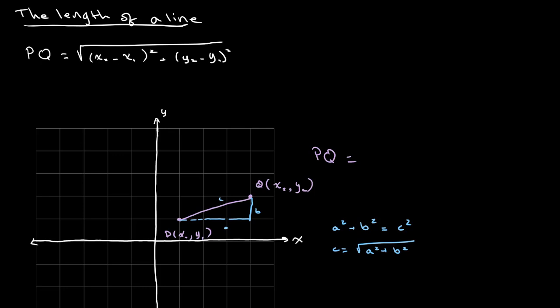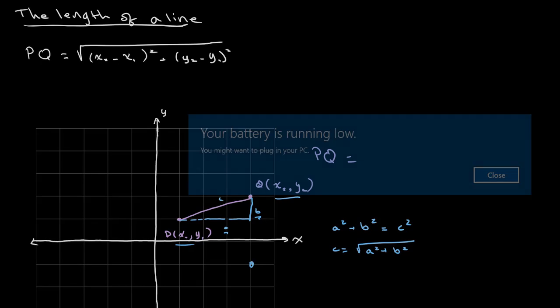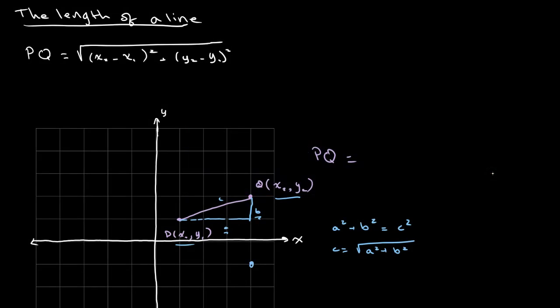So now all we need to do is we need to solve for b and a. Well we already know x2 and y2 and x1 and y1, so we can easily derive a and b from that. So our value for a will be, let's say that a runs from here to here, then this point is x2 and this point is x1, therefore a can be x2 minus x1 whole squared.